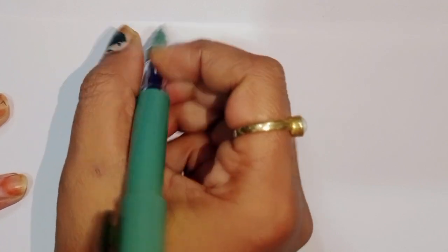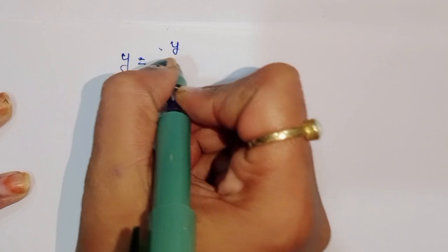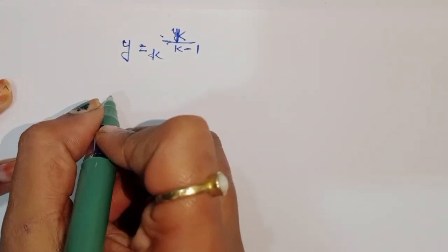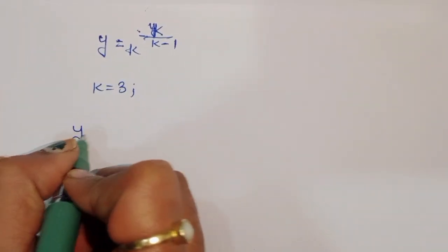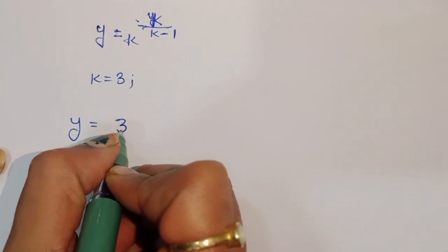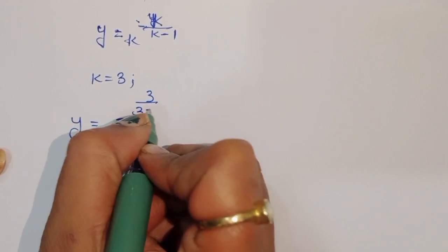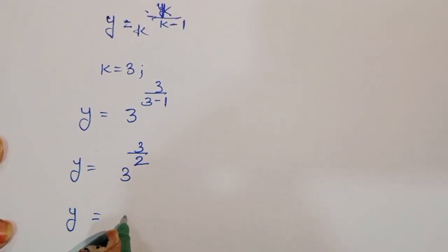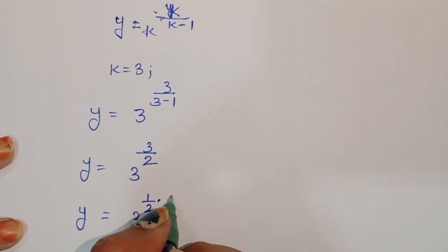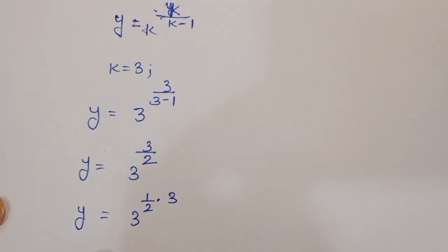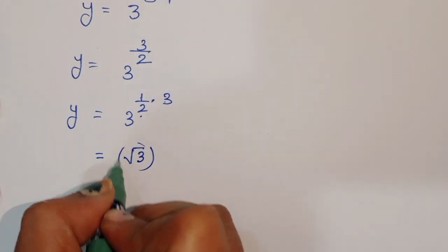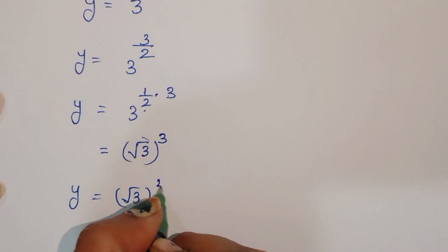Now finding y: y = k^(k/(k−1)) = 3^(3/(3−1)) = 3^(3/2). We can write this as (3^(1/2))^3, meaning y equals the square root of 3 raised to the power 3.